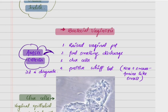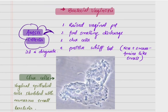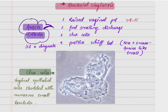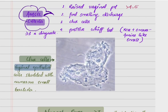For the diagnosis of bacterial vaginosis, there is a criteria called Amsel criteria. It consists of four points: raised vaginal pH — pH more than 4.5 — and foul-smelling discharge that is homogeneous, the presence of clue cells, and a positive whiff test.